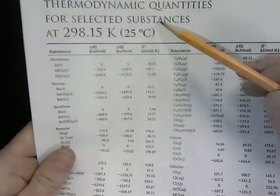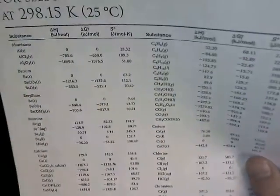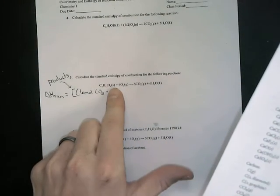Which is found in our handy dandy packet here, and I will also provide you additional delta H values here in the future. For this chart here, it said thermodynamic quantities at 298 Kelvin or 25 degrees Celsius.